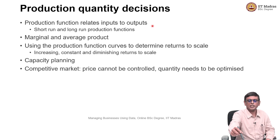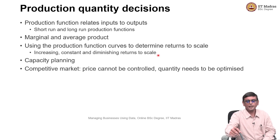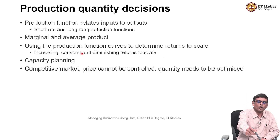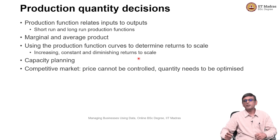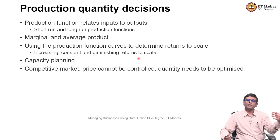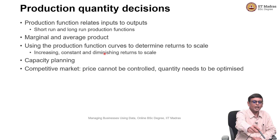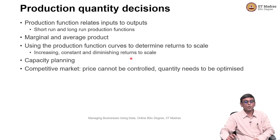There is the concept of production function, which relates input to output. Using the production function, you can talk about marginal and average product. Then there is the idea of increasing, constant, and diminishing returns to scale. You can keep making more output from inputs for some time — that is increasing returns to scale — then adding input is not changing the output much, which is constant returns to scale. After some time, adding input may even cause returns to reduce — that is diminishing returns to scale, for example when more people just talk to each other and productivity reduces. Ideally, you want to operate in increasing or constant returns to scale.